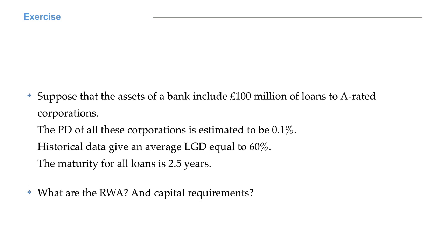Let's consider an exercise. For simplicity, we assume risk-homogeneous counterparties. Suppose that the assets of a bank include 100 million pounds of loans to A-rated corporations. The PD of all these corporations is estimated to be 0.1%. Historical data give an average loss given default equal to 60%. The maturity for all loans is 2.5 years.